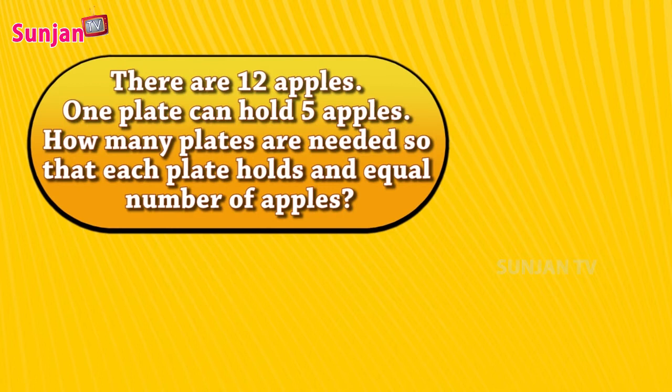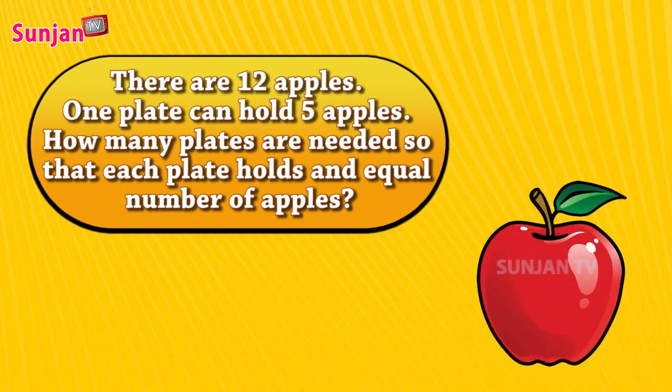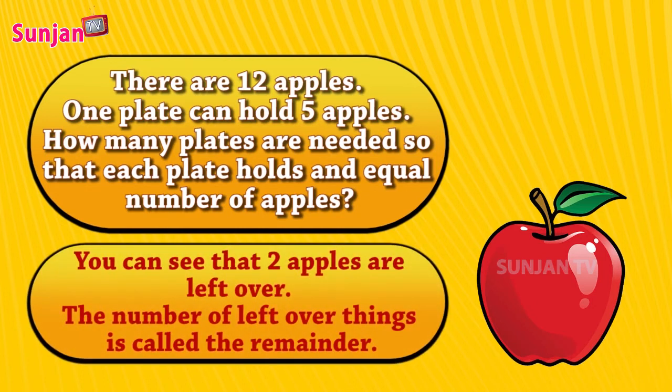Example: There are 12 apples. One plate can hold 5 apples. How many plates are needed so that each plate holds an equal number of apples? You can see that two apples are left over. The number of leftover things is called the remainder.